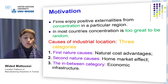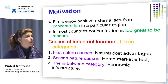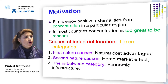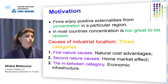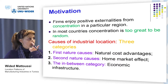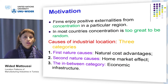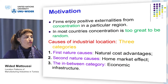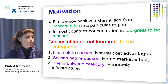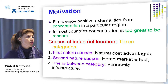The second category is what we call second nature causes or the whole market effect. These concern concentration attributed to the interaction between economic agents. They are divided into agglomeration forces operating via factors of production including physical and knowledge spillovers and labor market pooling, and agglomeration forces operating via goods related to demand and cost linkages.